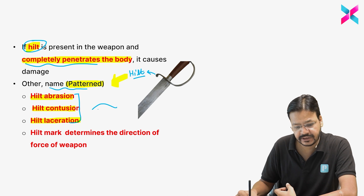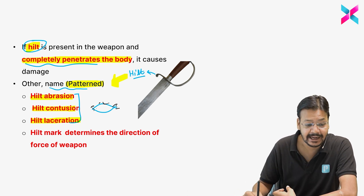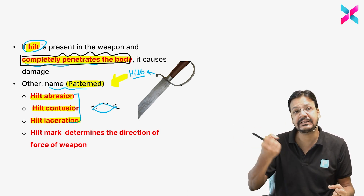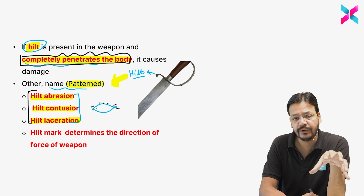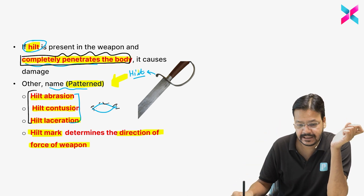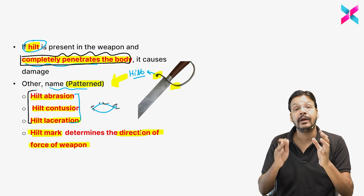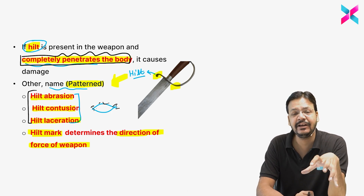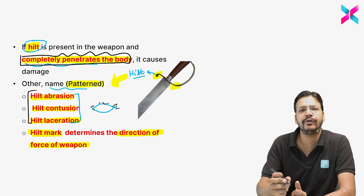Sometimes you may get a question: if surrounding a stab injury you see hilt abrasion or hilt contusion, it indicates the knife has completely penetrated the body. The three hilt injuries are hilt abrasion, hilt contusion, and hilt laceration. The hilt mark determines the direction of force of the weapon — if the hilt is on a particular side, the hilt injury will be on that side. These are only seen when the knife completely penetrates the body.